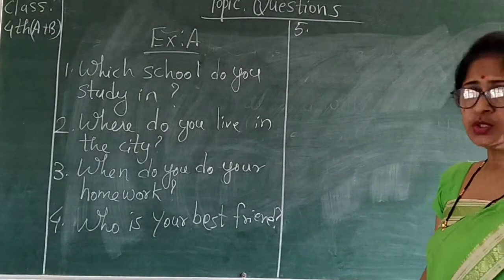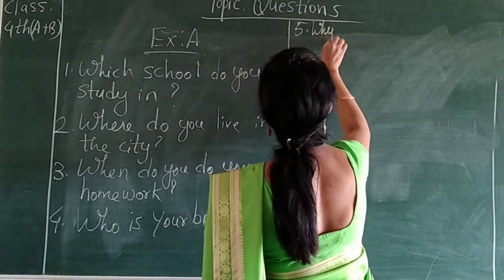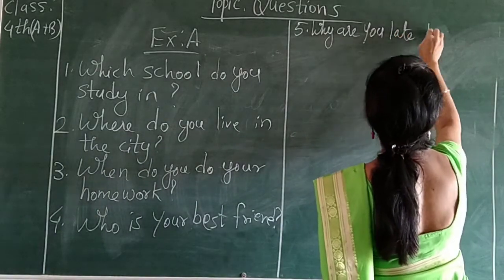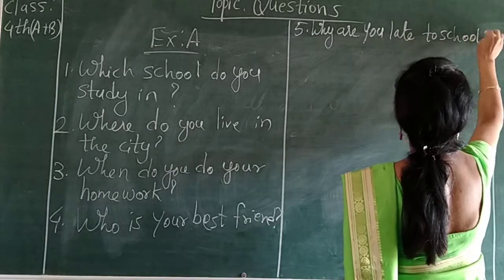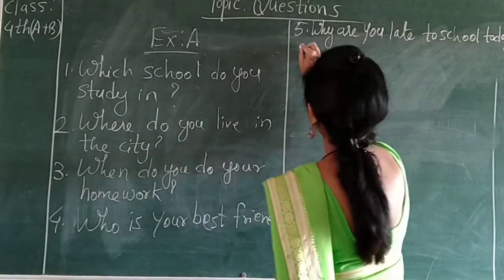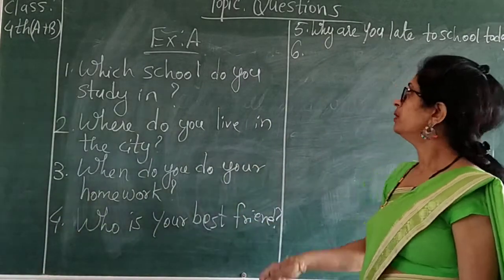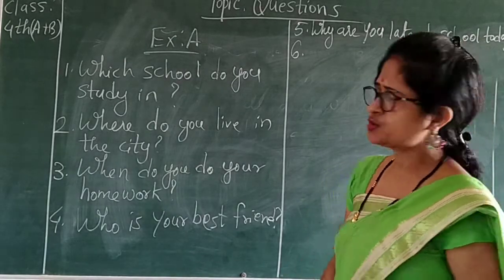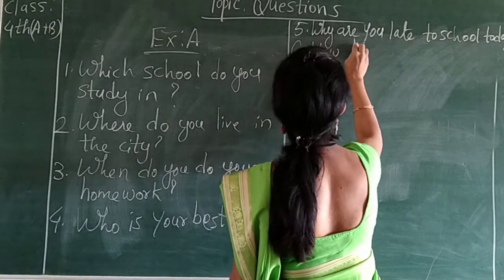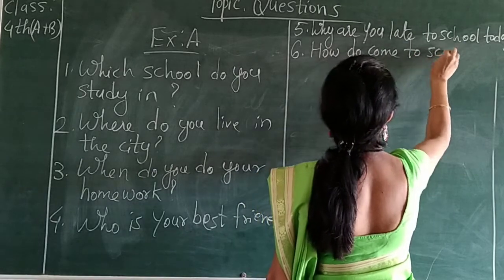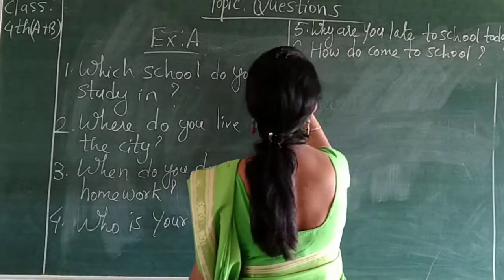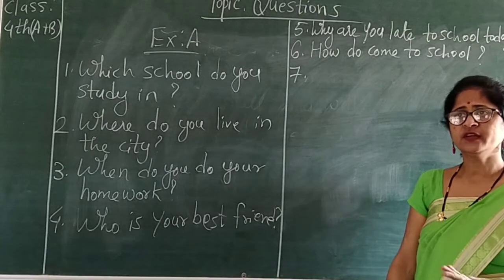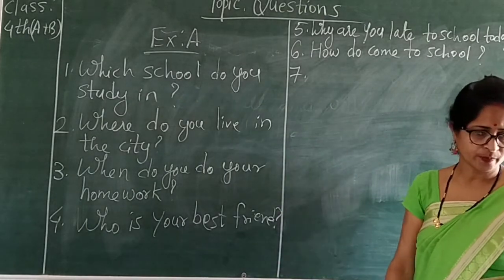Number five: Why are you late to school today? You have to give your own reason — for example, my cycle had a puncture, or the bus came late. Number six: How do you come to school? I come to school by bus, or by bicycle, or by auto rickshaw — whatever vehicle is convenient for you, write that answer.